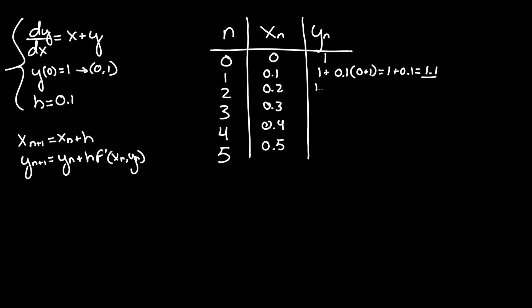Moving on, y_2 = y_1 + h·f'(x_1, y_1). We found y_1 = 1.1, and x_1 = 0.1. You can draw these diagonally to see which variable applies next. So 1.1 + 0.1(0.1 + 1.1). Putting this in the calculator, you get 1.22.